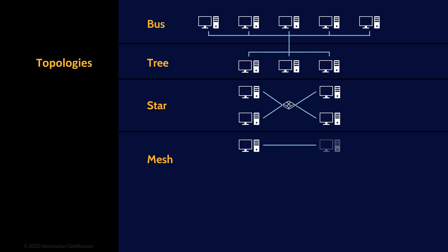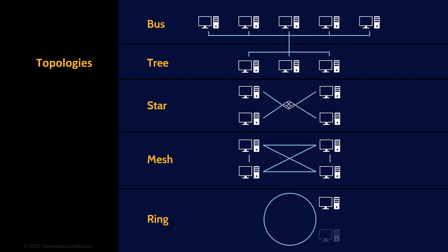Star topology means all systems are interconnected through a central device like a switch. The switch can direct packets only to the intended recipient, which greatly reduces collisions and increases network throughput. Mesh topology means every device is interconnected with every other device — wonderful for redundancy. Full mesh networks are very rare, but partial mesh networks where critical devices like boundary firewalls and routers are interconnected are very common. The old school token ring has built-in collision avoidance — a token is passed around the ring and a system can only send data when it has the token. But if a system malfunctions and doesn't pass the token, no one gets to talk.